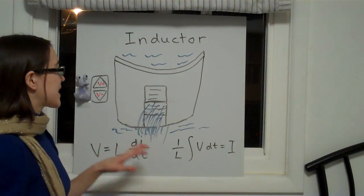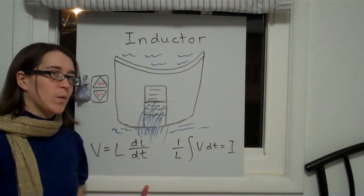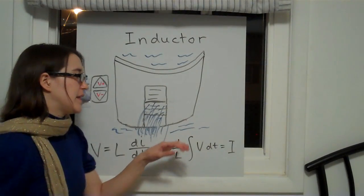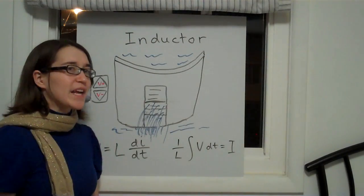This basic governing equation can be written as V equals L di/dt, or as an integral as 1 over L is multiplied by the integral of the voltage is equal to the current.